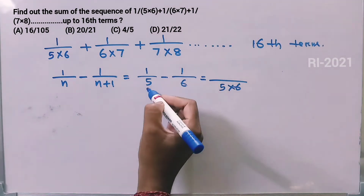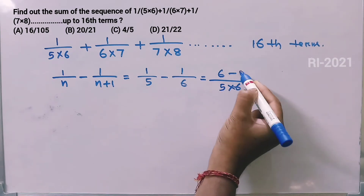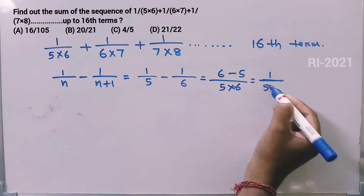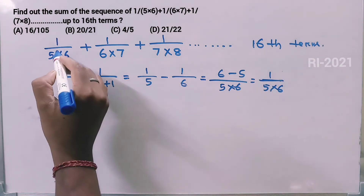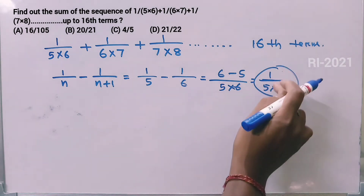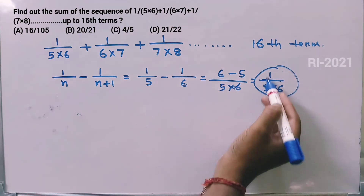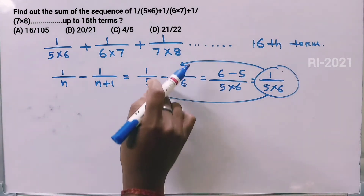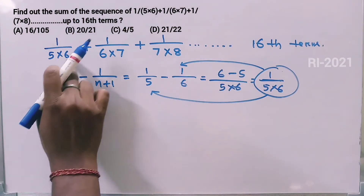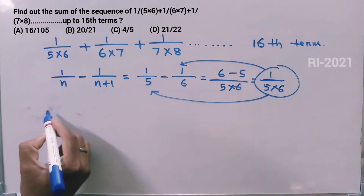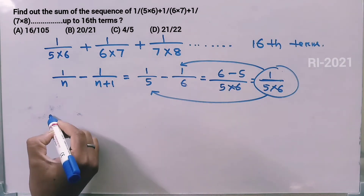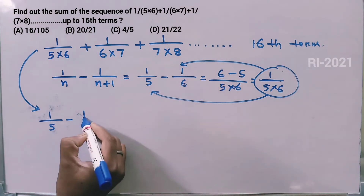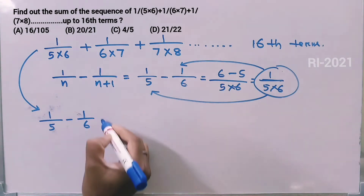Applying this to the first term: 1/(5×6) = 1/5 - 1/6.